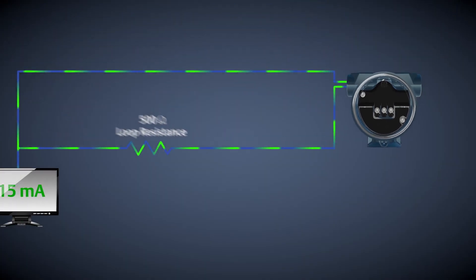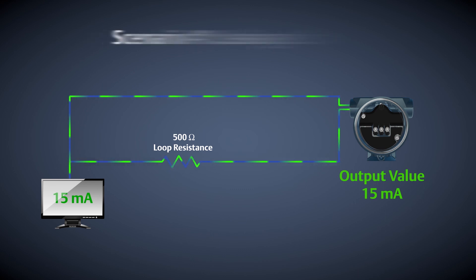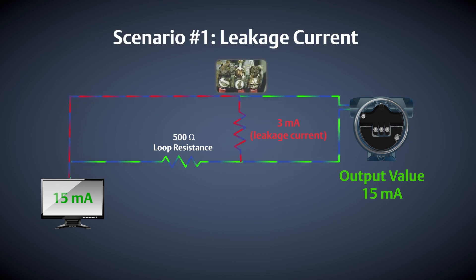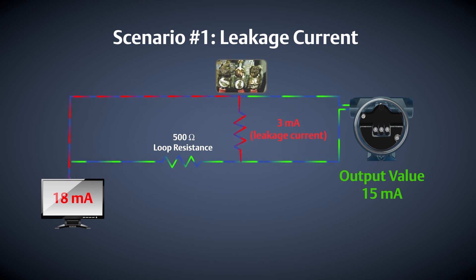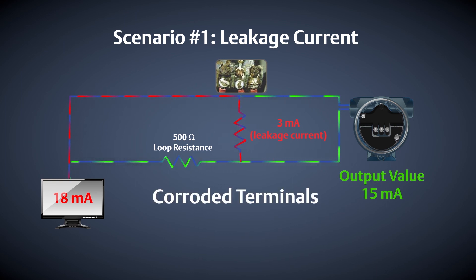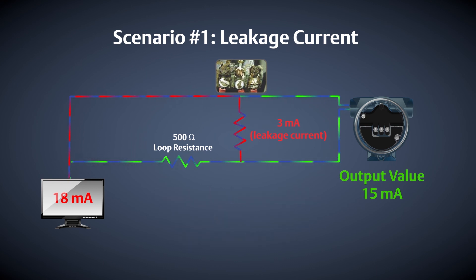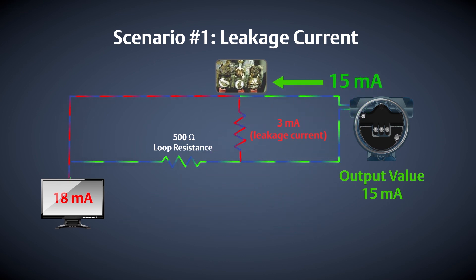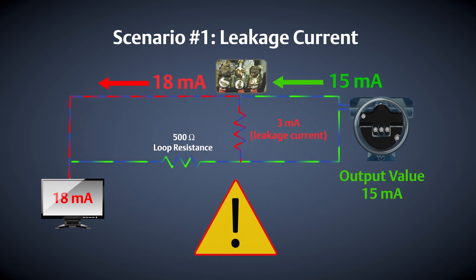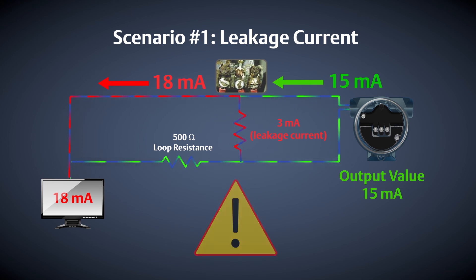Let's picture two scenarios which can lead to on-scale failures. The first scenario is a circuit that has leakage current, which is an electrical issue where an additional current path is created in the wiring. Leakage current can be caused by a number of human or environmental factors, including corroded terminals, water in housings or conduits, shorted wires, and others. This additional electrical path causes a discrepancy between what the transmitter is outputting and what the control system is receiving, resulting in an on-scale failure condition where you could be taking control action on bad information.